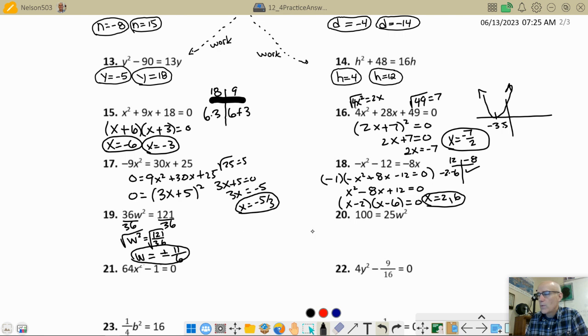This one, same thing as that one over there. Divide by 25. But 25 goes into 100 4 times. So I get 4 equals w squared. I take the square root of both sides. I get plus or minus 2. I'm done. And probably 5 seconds on that one.